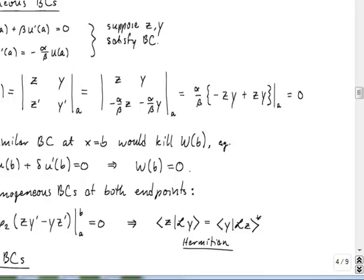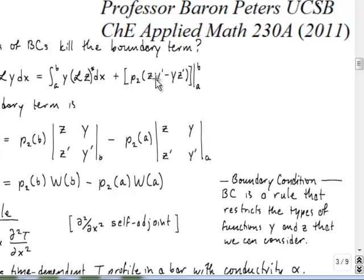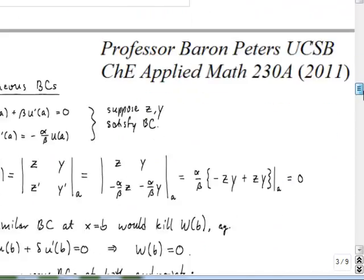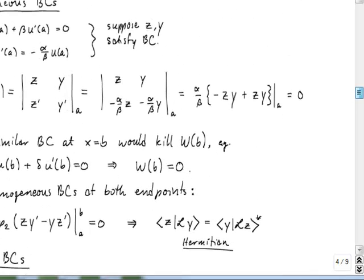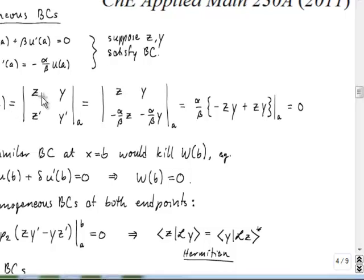So what we're going to do now is just walk through this expression and note that what we have up here is actually the Wronskian of Z and Y, and so let's see that more clearly in the boundary term. So if we look at the Wronskian of A, or the Wronskian at point A,